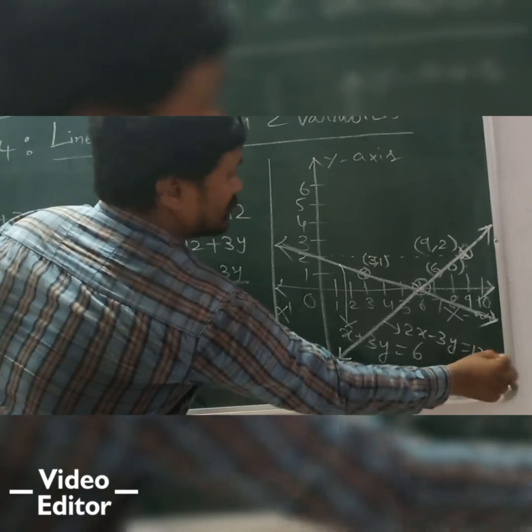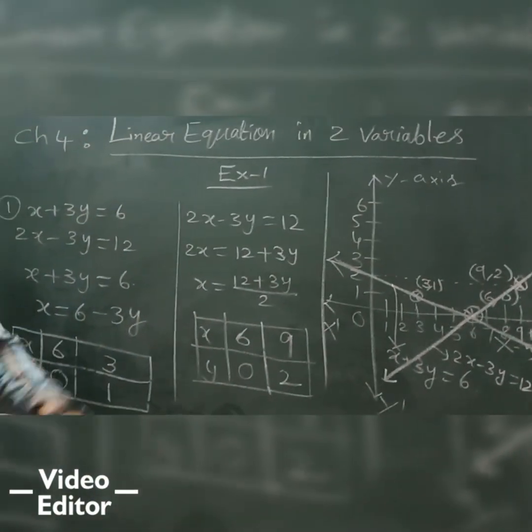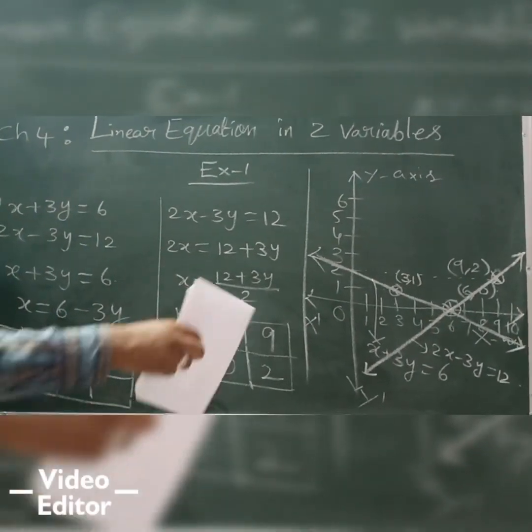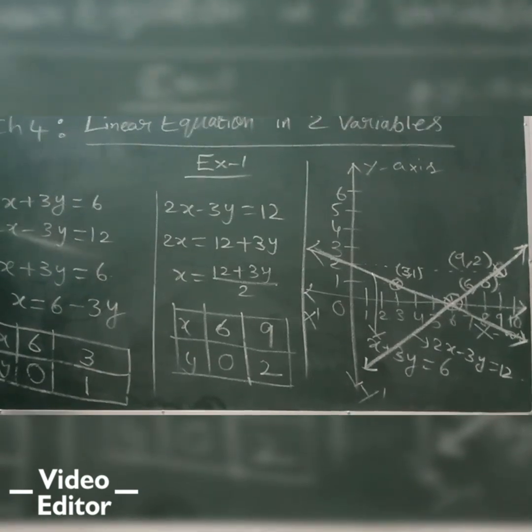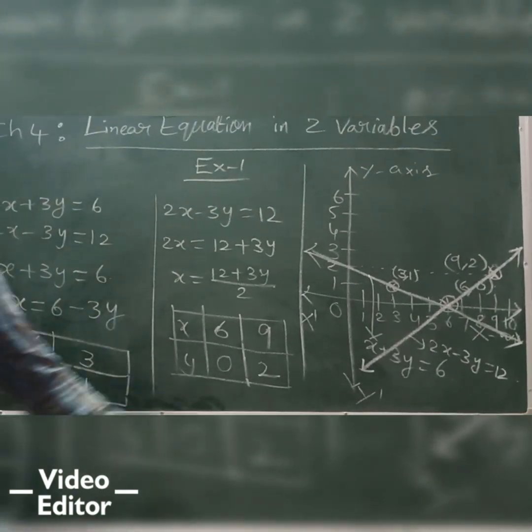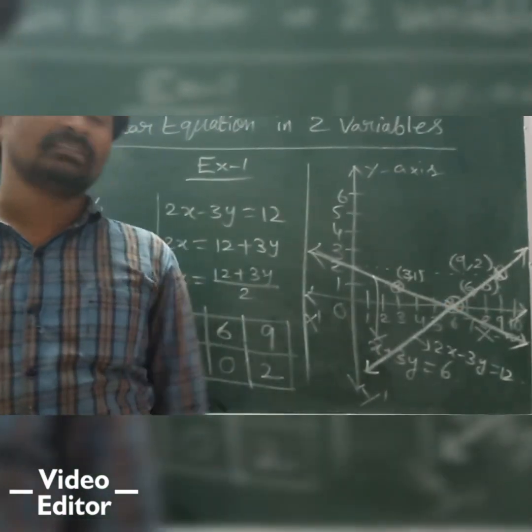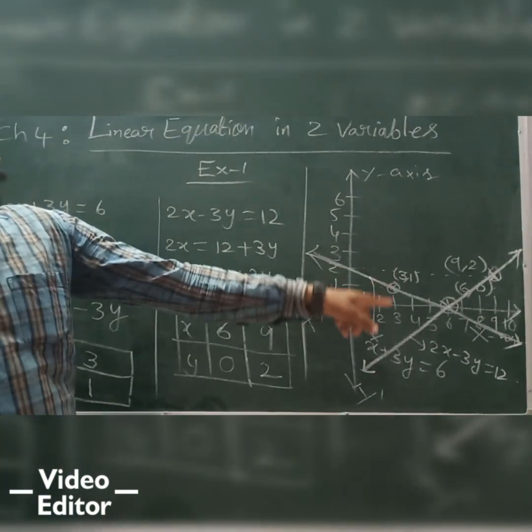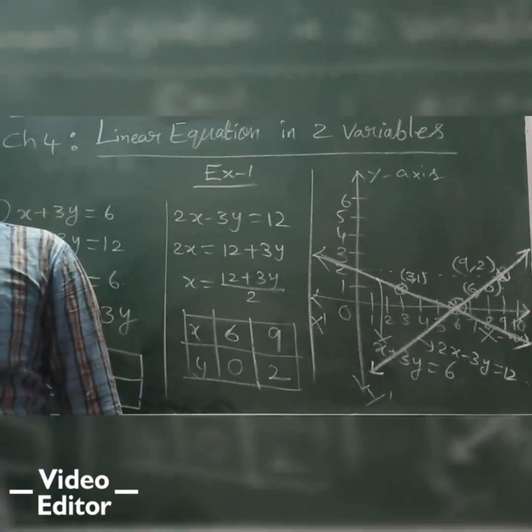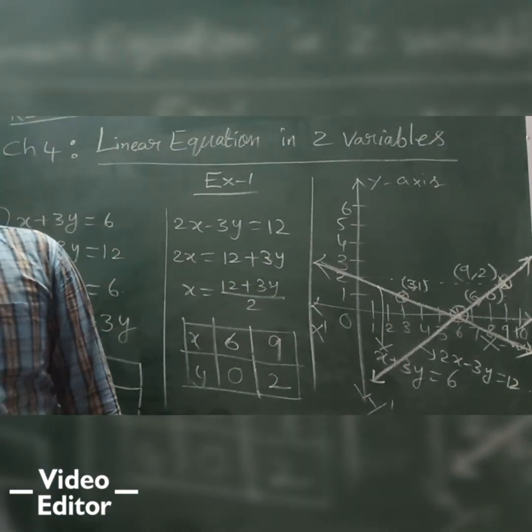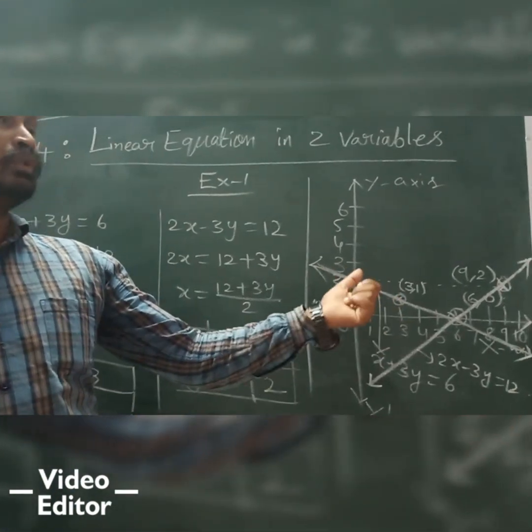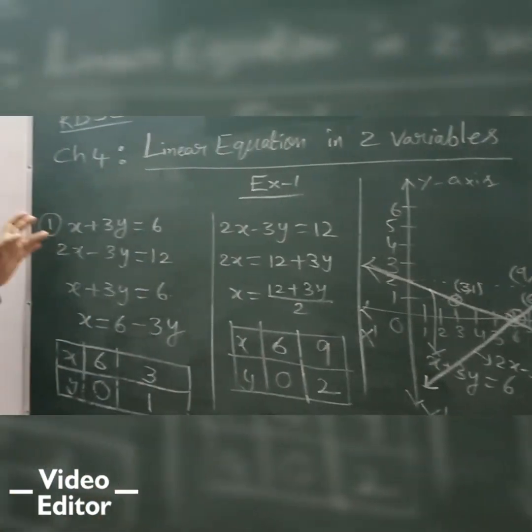Now, you are observing, are these two lines intersecting anywhere? Yes, it is correct. So, it is nothing but 6, 0. So, the two lines are intersecting at one point. And 6, 0 is called as the solution. This is how we are going to solve graphically.